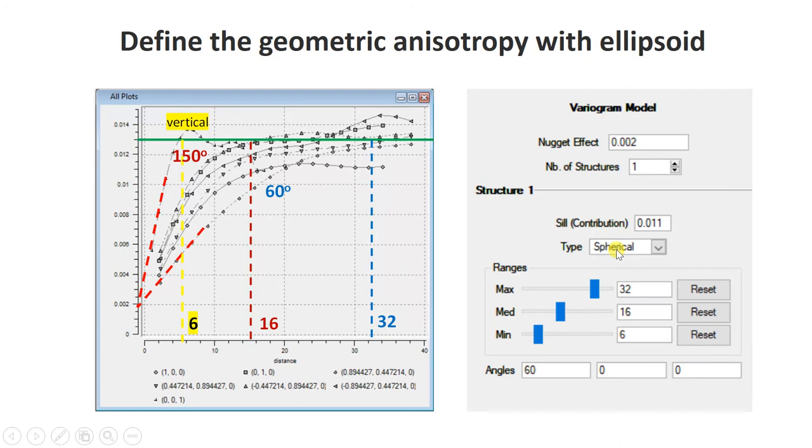We have the direction of maximum range, which is 60 degrees horizontal. I put azimuth 60 degrees. There's no dipping or anything else, so the other angles are zero because we have a vertically anisotropic system. These remain zero. Then I put in my maximum, median, and minimum range - these values here. That summarizes all the information we have. If you have more structures, you get more variograms. For example, zonal anisotropy can be modeled by two structures of geometric anisotropy.